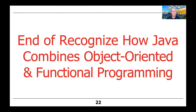That's the end of the overview of our discussion about how you can combine Java's object-oriented and functional programming paradigms effectively in practice to get the best of both worlds in modern Java's hybrid model.